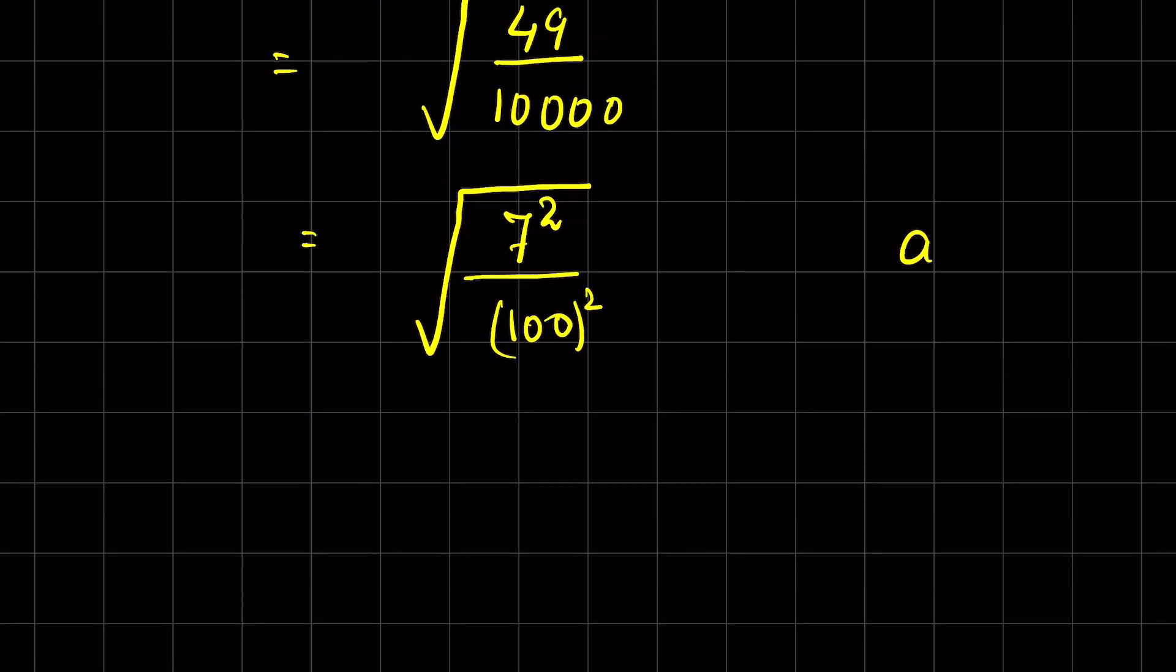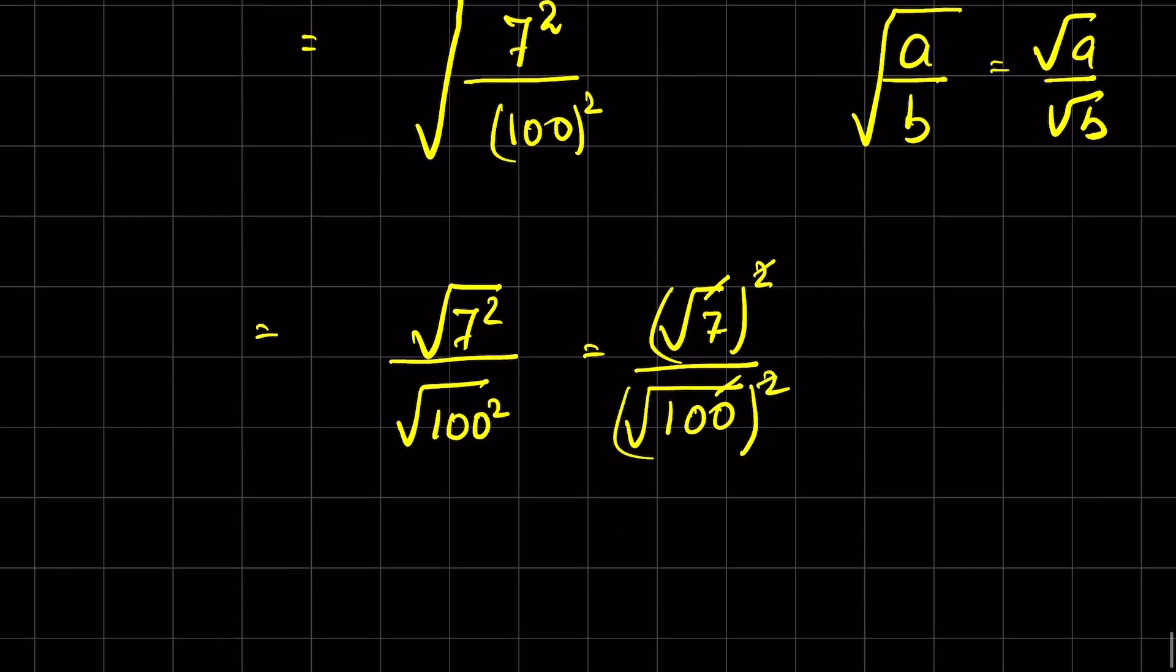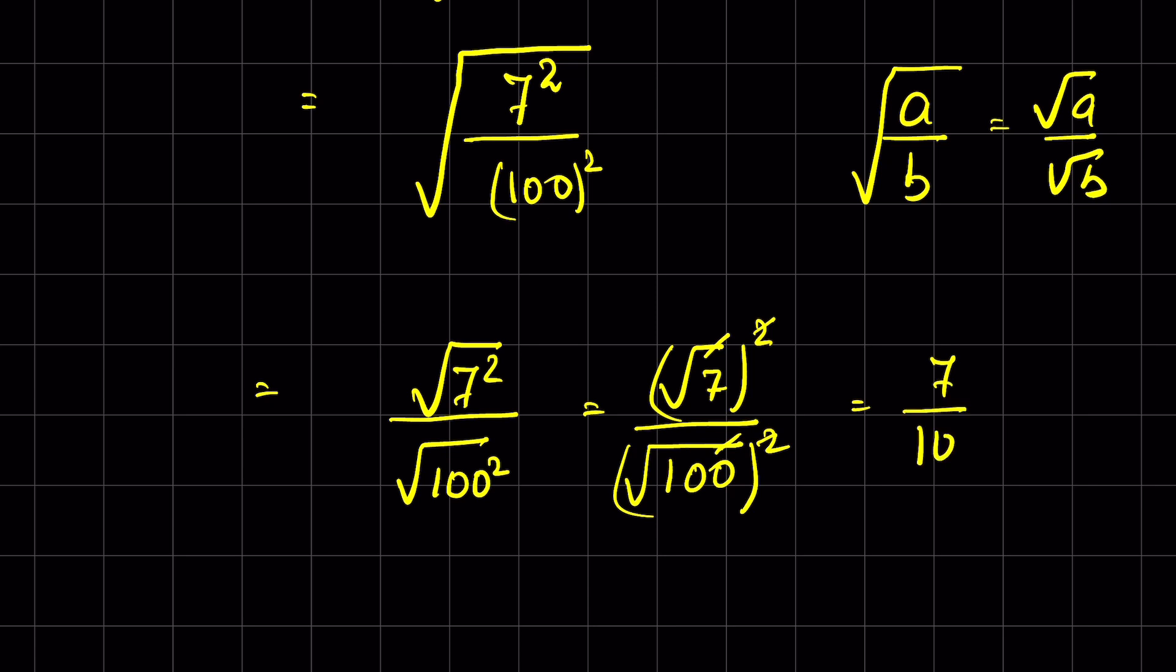Now when a upon b is under square root, we can write it as square root of a upon square root of b. So this will be square root of 7 squared upon square root of 100 squared. Now we can remove the square root with the square. So this is 7 upon 100.